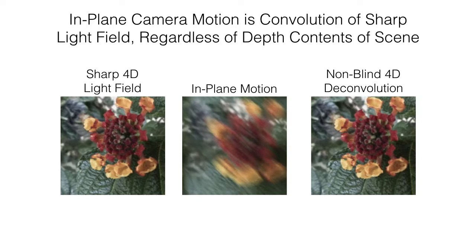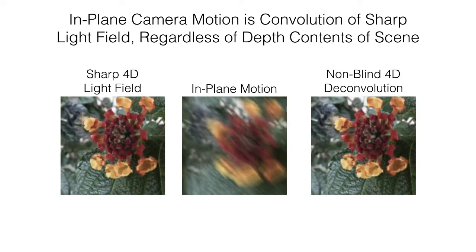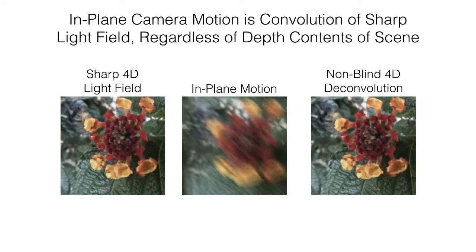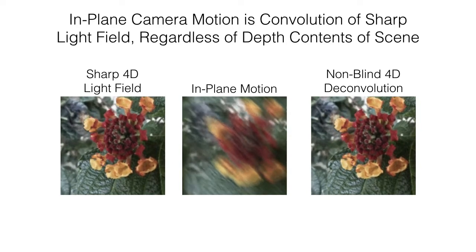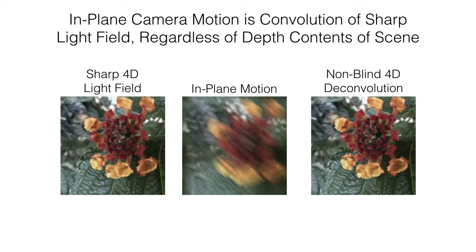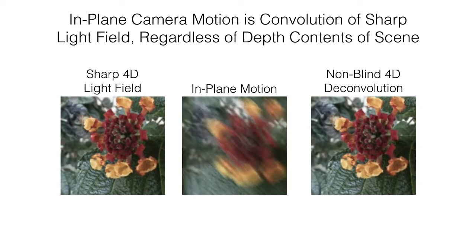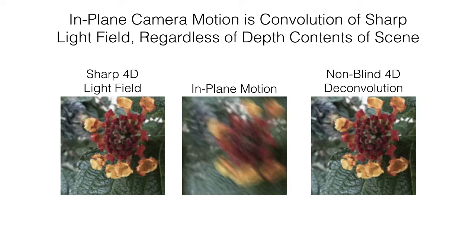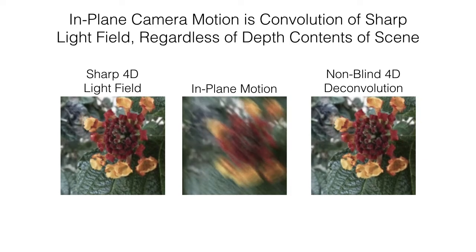First, we show that a light field blurred with in-plane camera motion is a simple convolution of the sharp light field with the camera motion path kernel, regardless of the depth contents of the scene. This allows us to use simple deconvolution to restore the sharp light field, which cannot be done with conventional images because the magnitude of the motion blur is depth dependent.